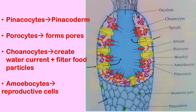Choanocytes create water currents and filter food particles; these cells are known as collar cells and they are flagellated. Lastly, amoebocytes are involved in gamete production, which is why they are known as reproductive cells.